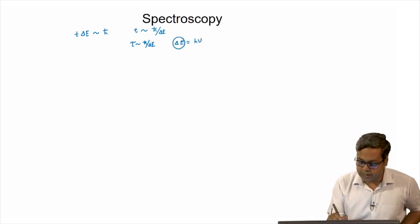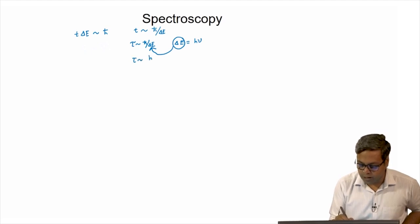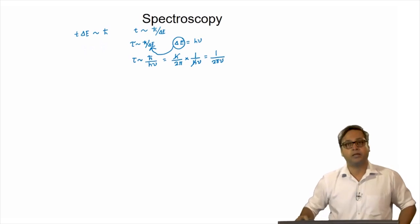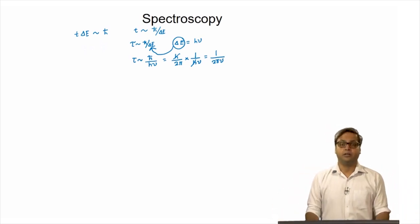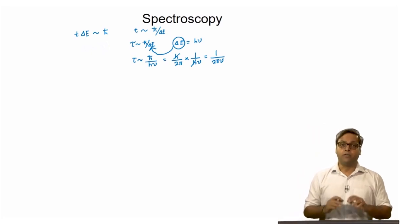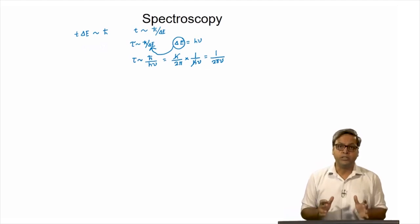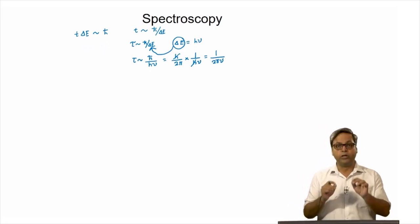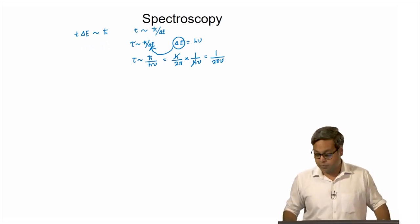If we put this delta E value in the expression, what we find is tau is of the order of h-cross by h nu, that is h by 2 pi times 1 by h nu. So we cancel h and have 1 by 2 pi nu. This tells us that a transition from one stationary state to another happens within the time taken for a complete oscillation of the light wave. If the frequency nu is less, the time scale will be more; if the frequency is more, the time scale will be less.